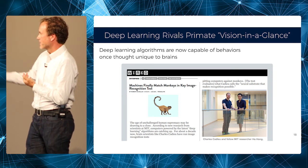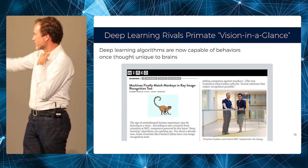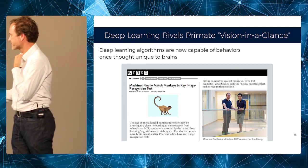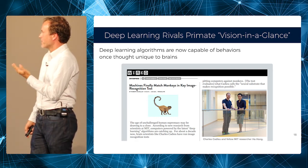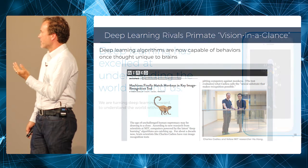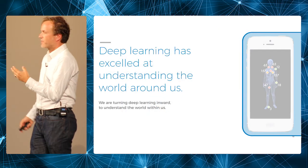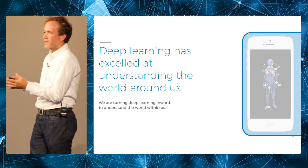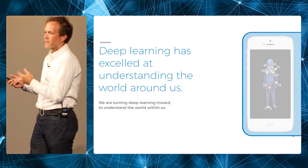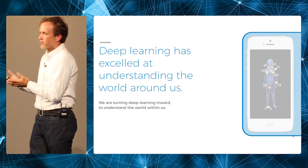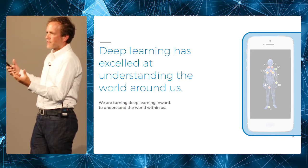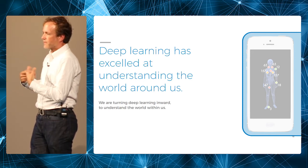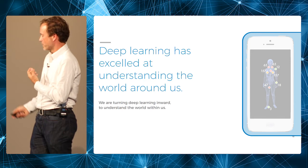Here's a Wired article about this — this is Charles and Hao, who are with me at Bay Labs. We were very excited and thought: if these neural networks are so good at understanding objects around us in the world, it should be possible to take the same neural networks and train them on data inside of us to understand what's going on inside our bodies.